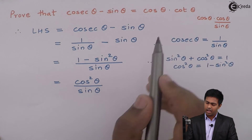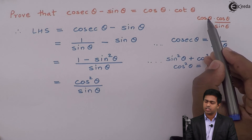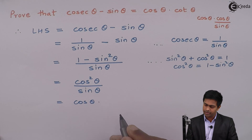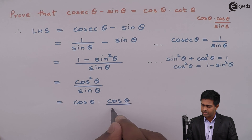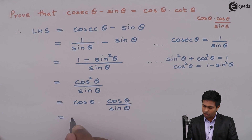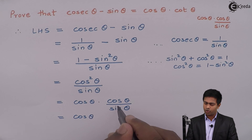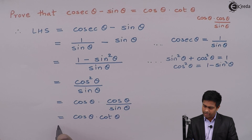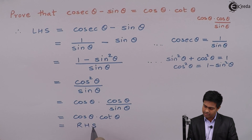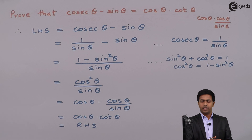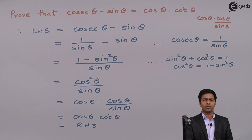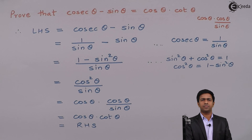To get the final answer, I will convert cos square theta as cos theta into cos theta. Taking one cos theta separately with the sin theta in the denominator — cos upon sin is cot. So here we get cos theta into cot theta. We have proved that cosec theta minus sin theta equals cos theta into cot theta by converting all the trigonometric ratios in terms of sin theta and cos theta. Thank you.